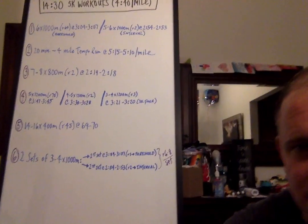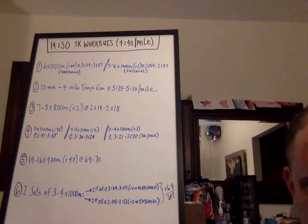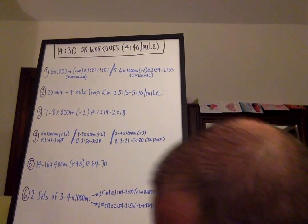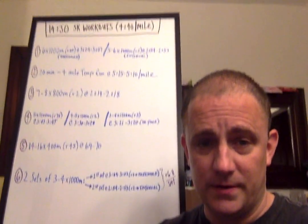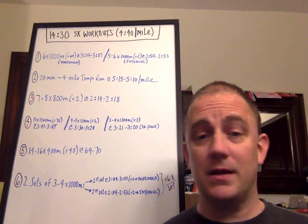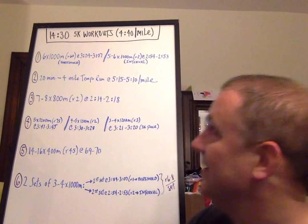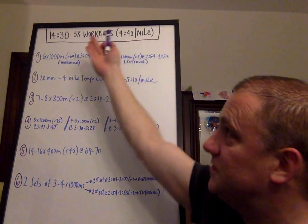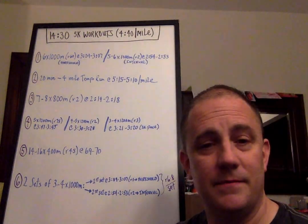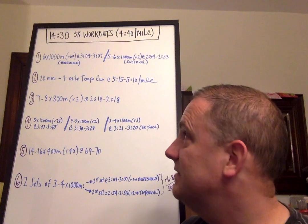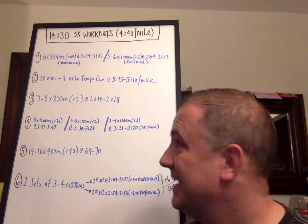Let's get over to the good stuff, the details, the meat and potatoes, the nitty gritty. Six workouts. So 4:40 per mile is a 14:35 5K. Nice, even numbers.